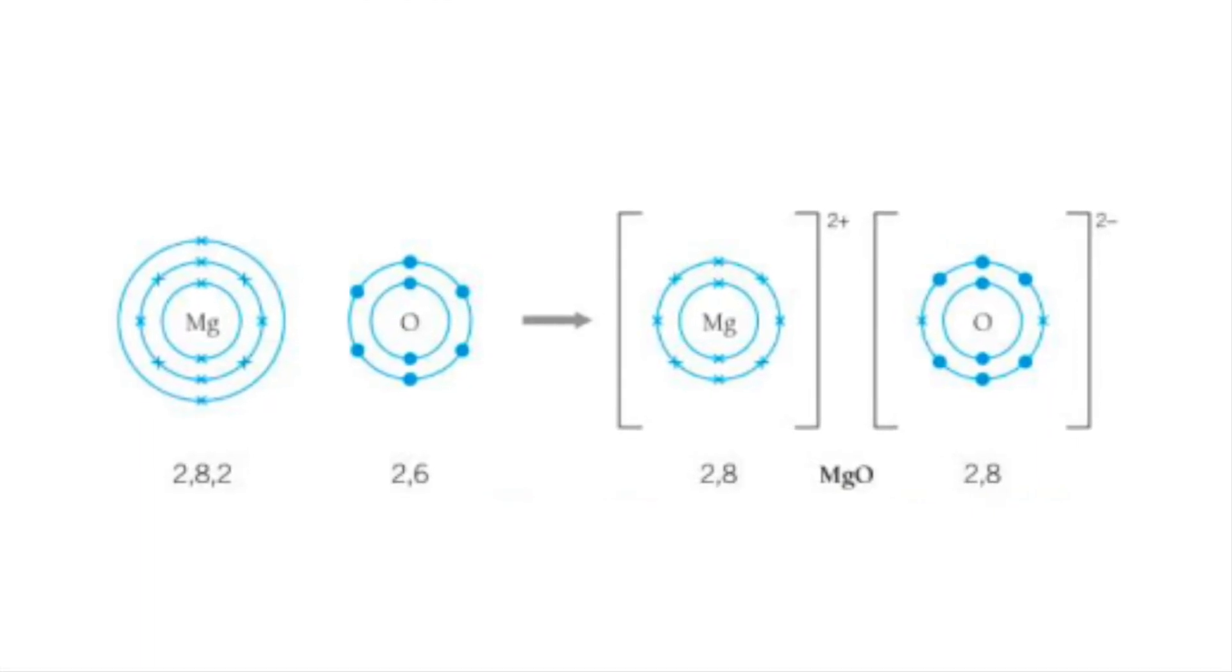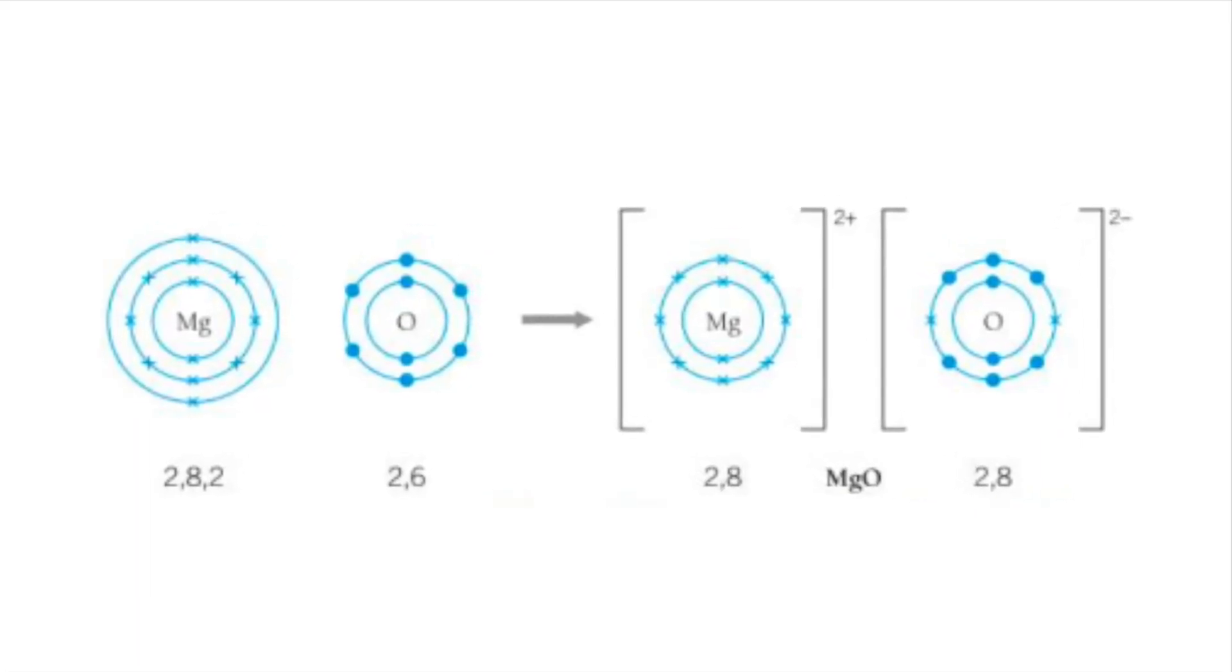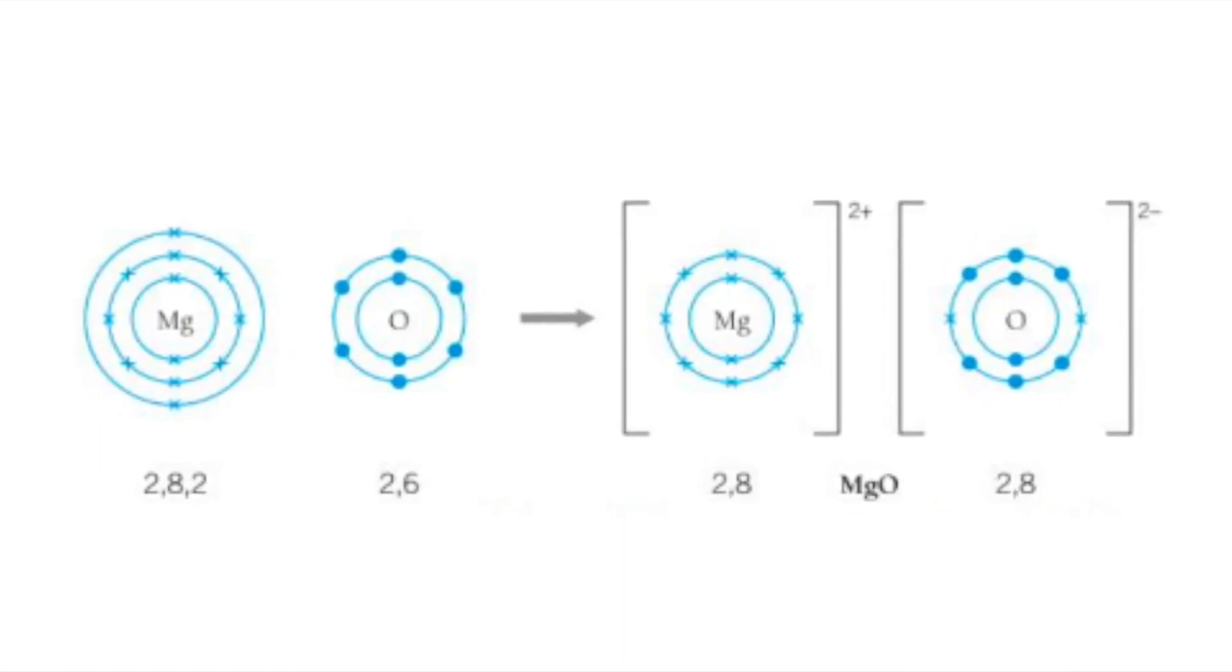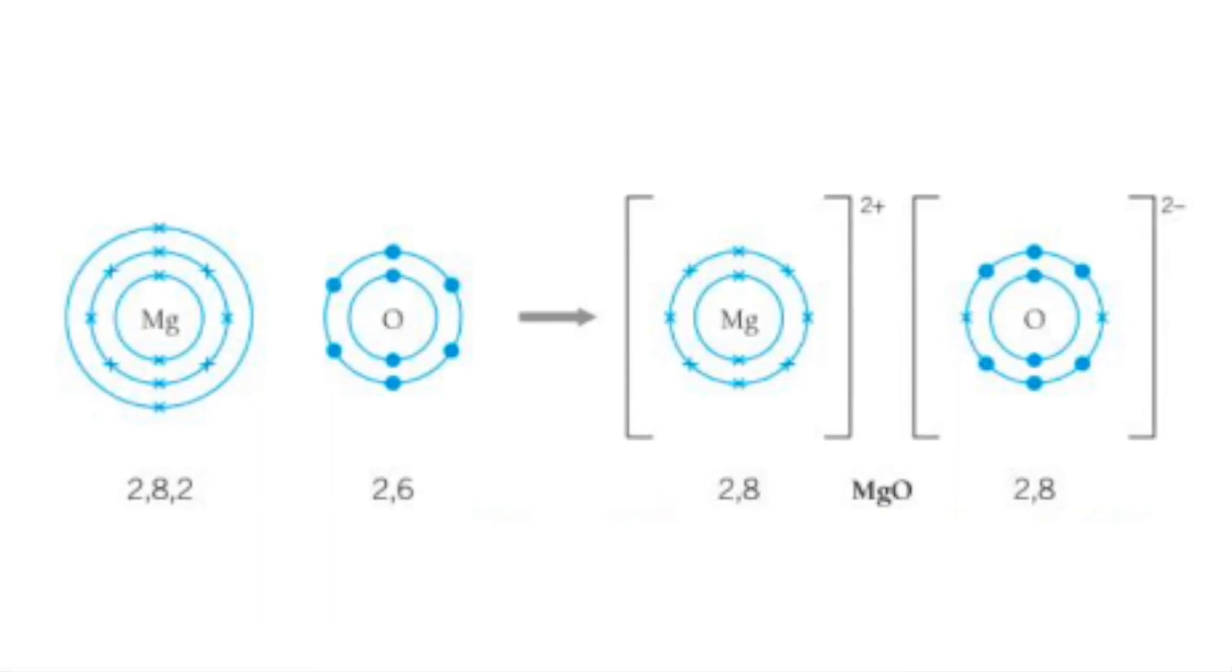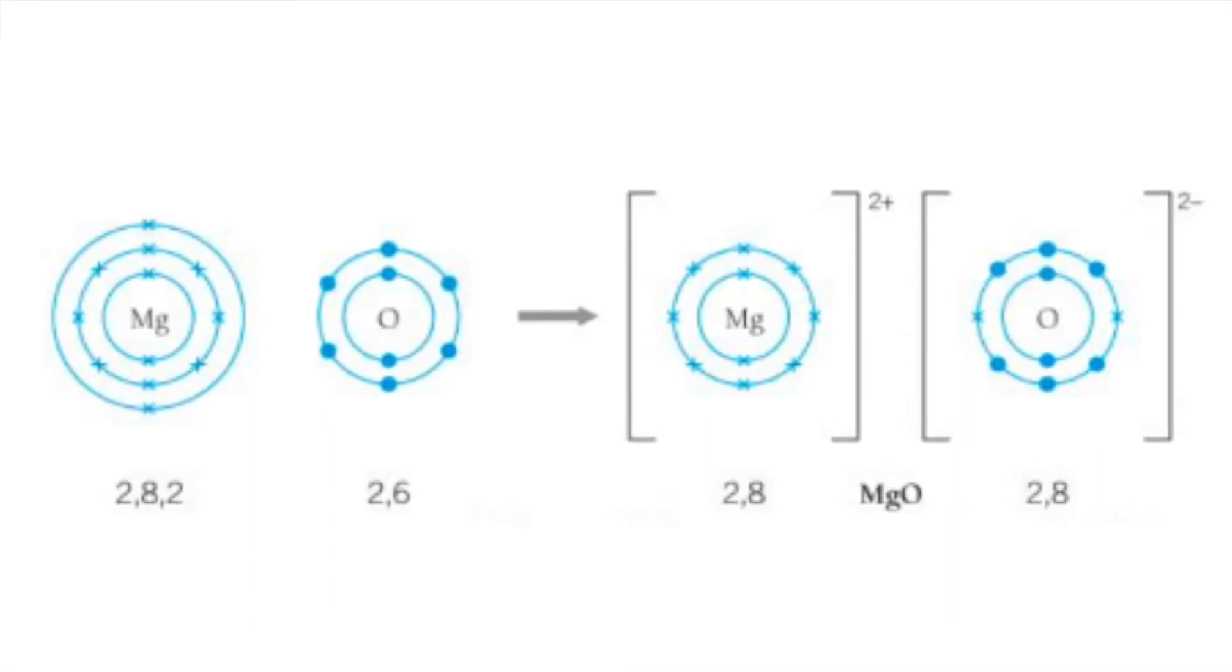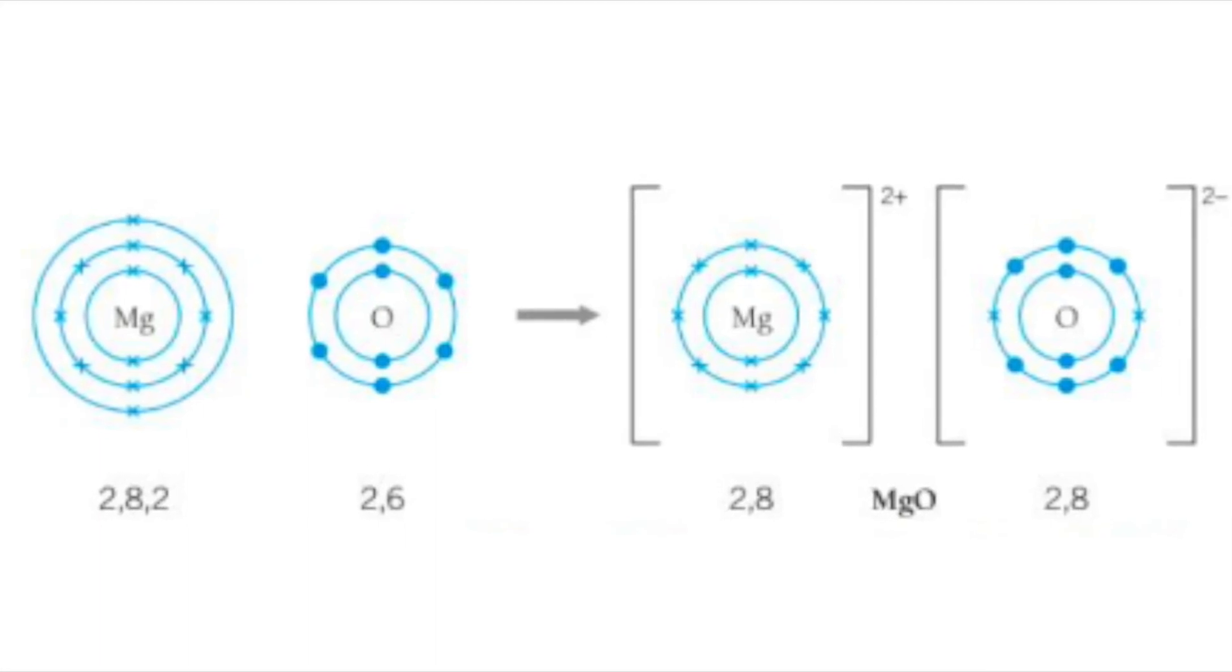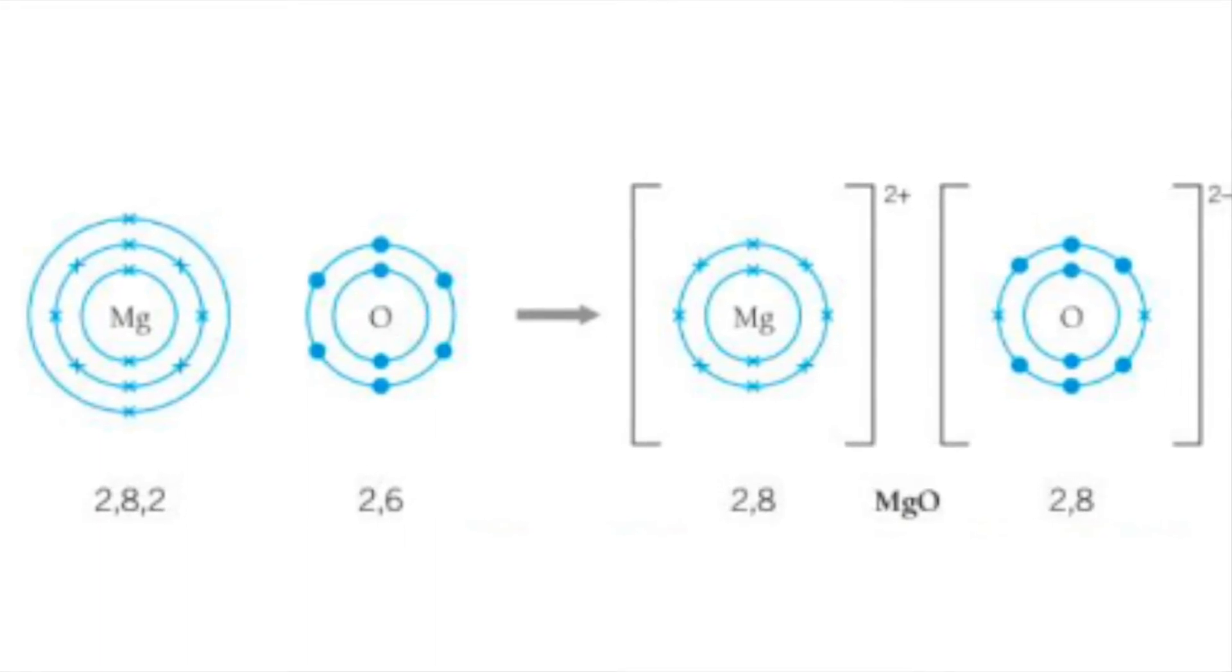Now when a reaction has happened, magnesium loses its two outer electrons to complete its final shell. And these two outer electrons are represented and shown on the oxide ions, which completes its outer shell with these two electrons. This means that they both have a stable electronic structure and their reaction is complete.